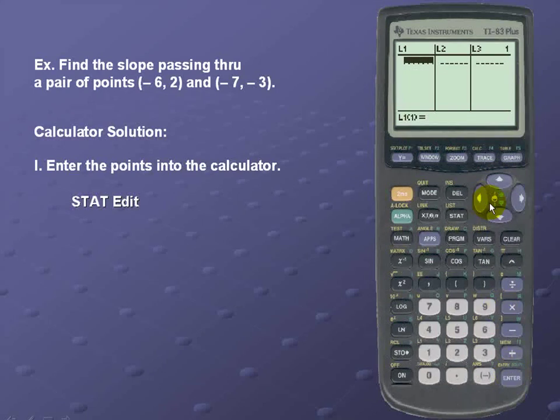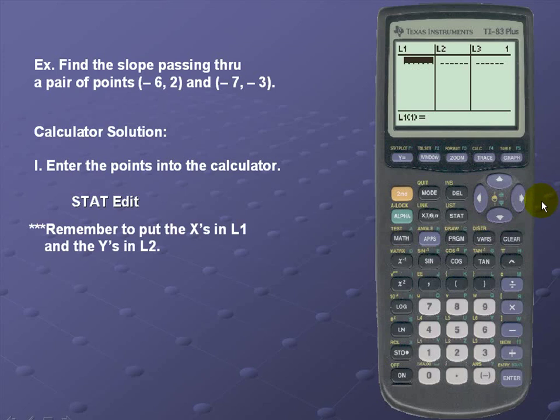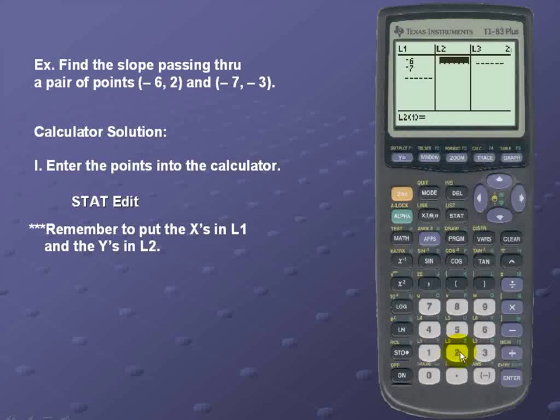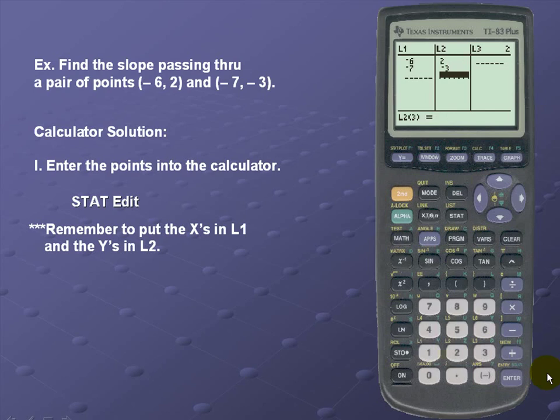So now we'll put in our set of points. We want to keep in mind that we're going to put the X's in list 1 and the Y values in list 2. So on our list 1 we'll put -6, -7. And on our list 2 we'll put the corresponding Y values 2 and -3.